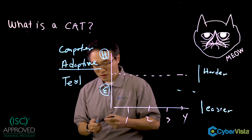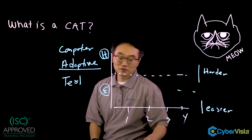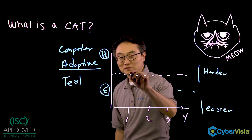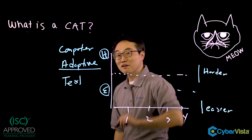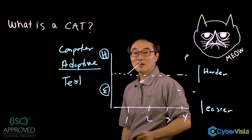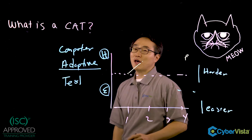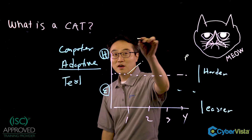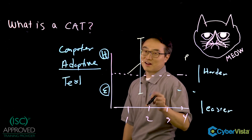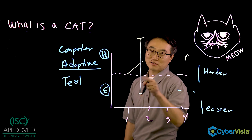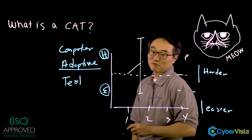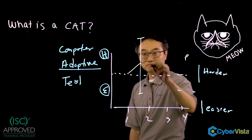Let's follow this graph down as you're taking the test. The first question, you got it right. You are at the passing level right now. And at the same time, what's happening is that the computer is going to say, I'm about this sure that this guy, Zhang, is going to pass this test after getting the question right.